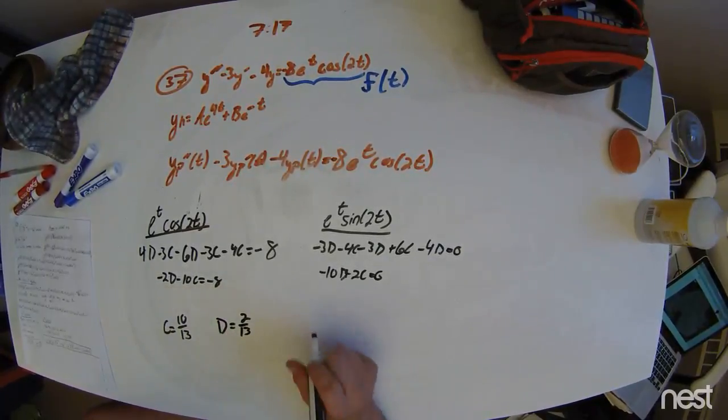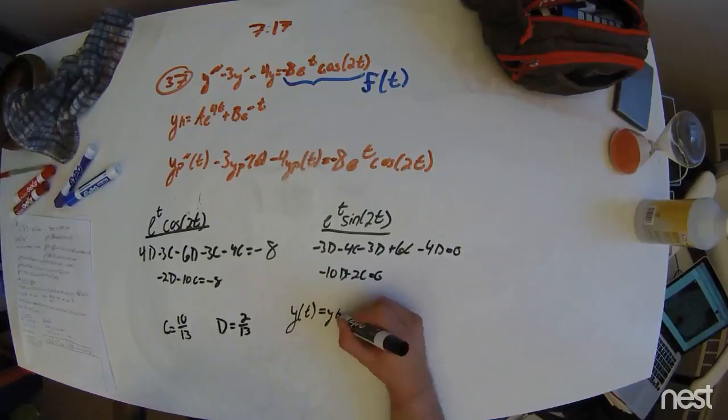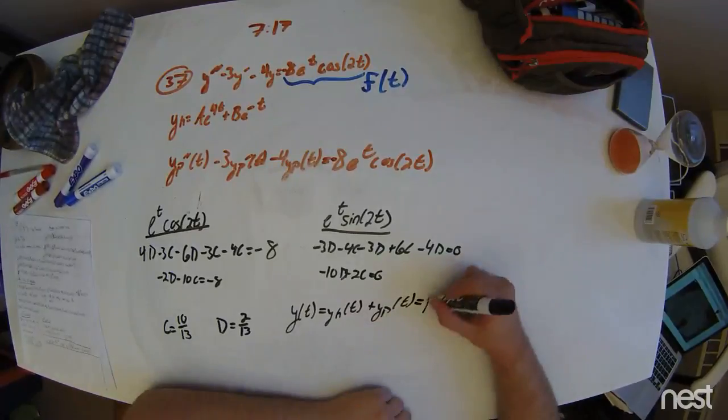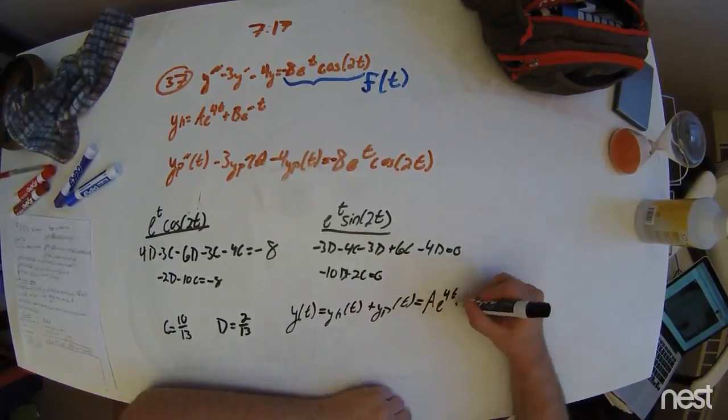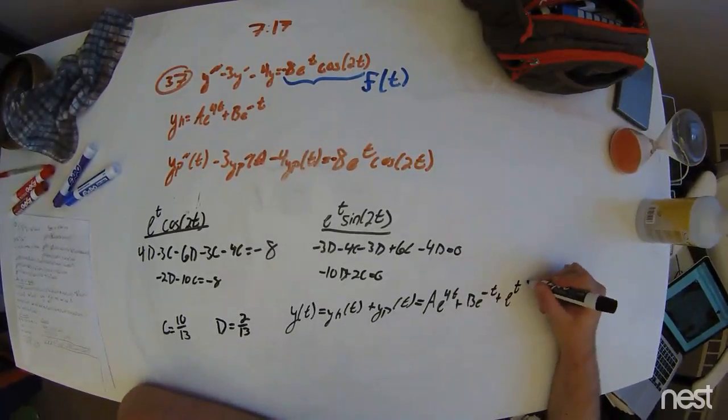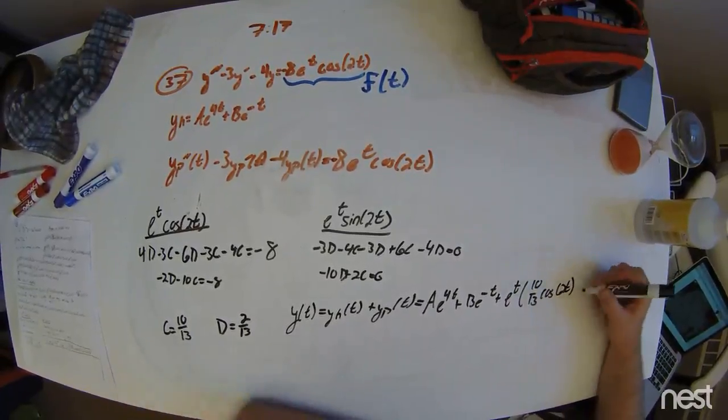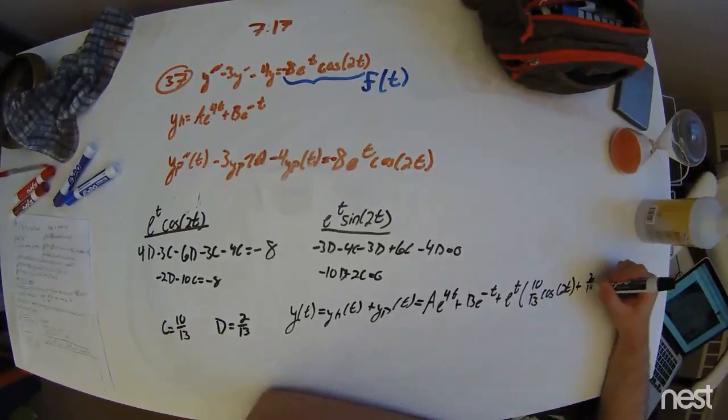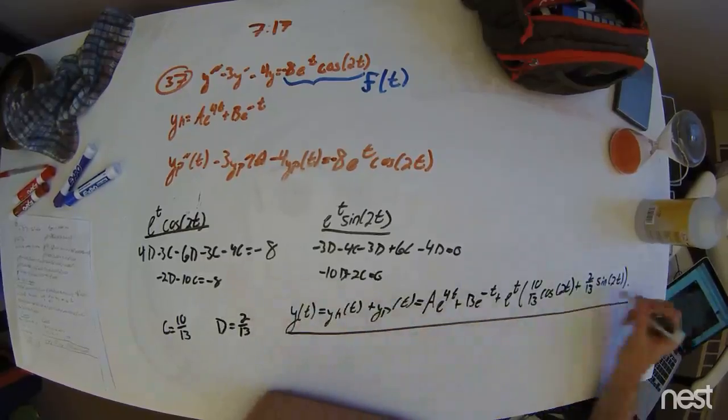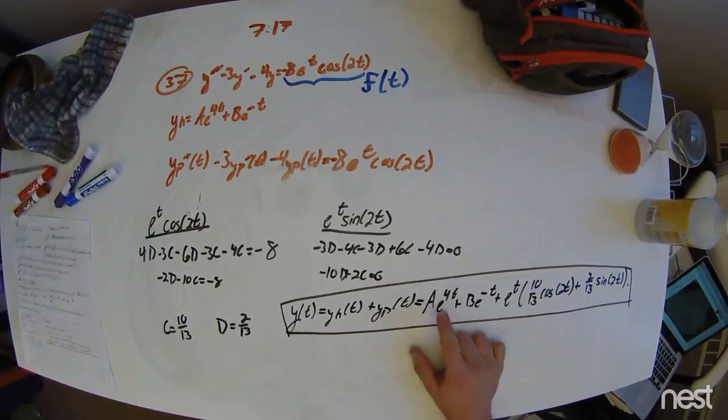With this, you can now rewrite our y of t, which is a linear combination of y homogeneous plus y particular. This is our whole solution to this problem without being given additional conditions to solve for the constants A and B.